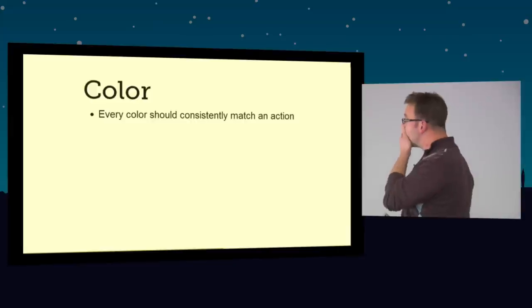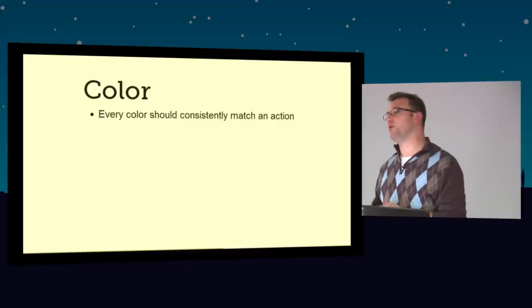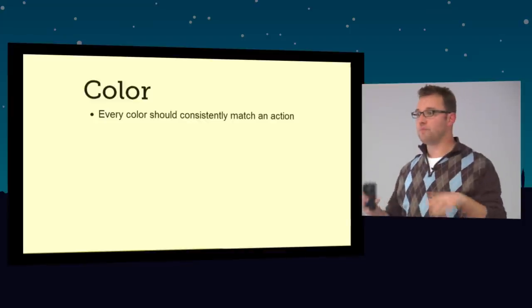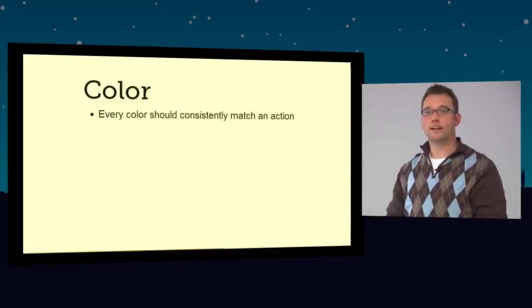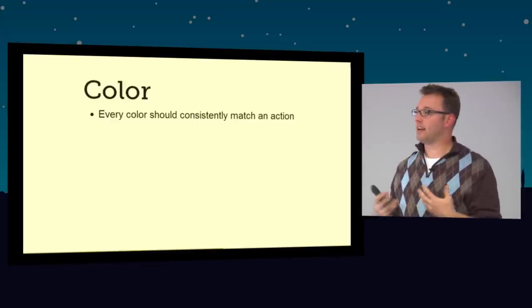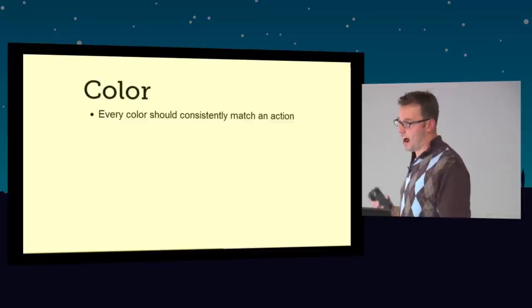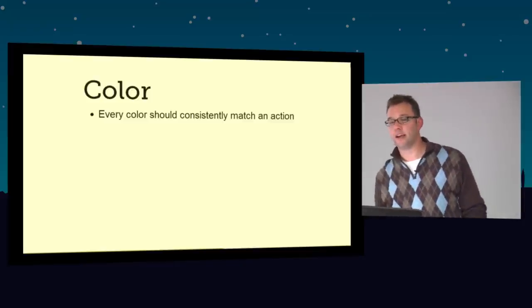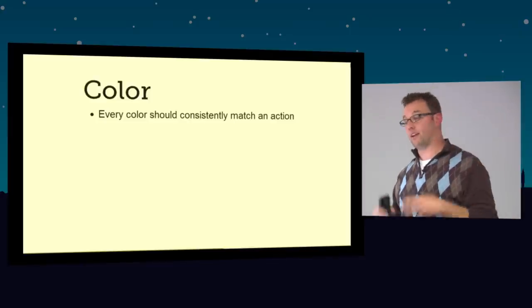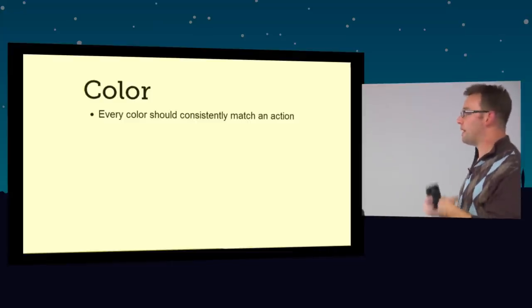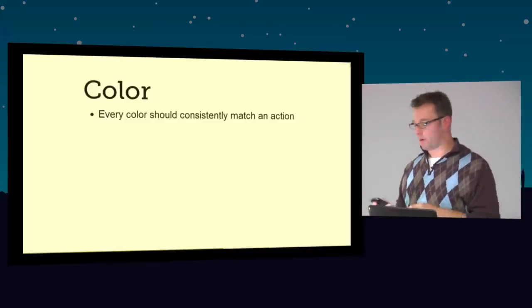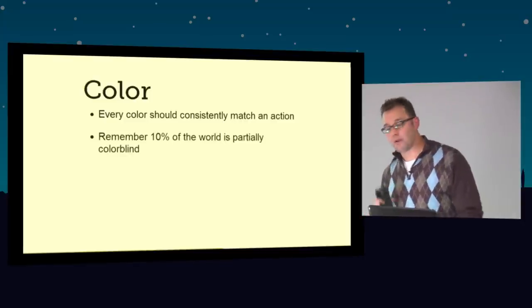All right, color. Every color that you put on a page is important, because the more consistent you are with your colors, the easier it is for a user to navigate through your site. For 90% of this country, color is the number one indicator of action. Red means stop, right? Green means go, or money, or look at this, depending on its context. So color is very important. I always tell people that every color should consistently match an action on your website.